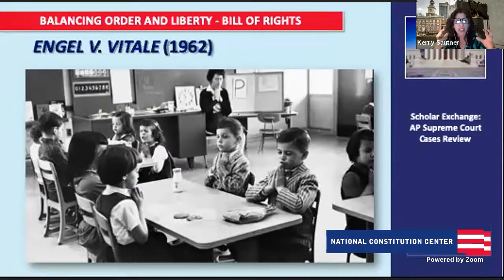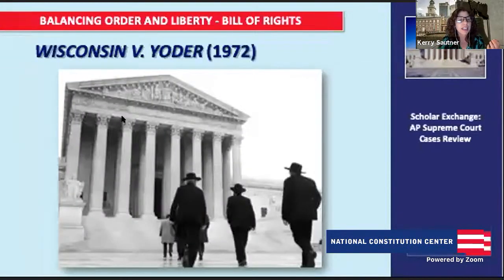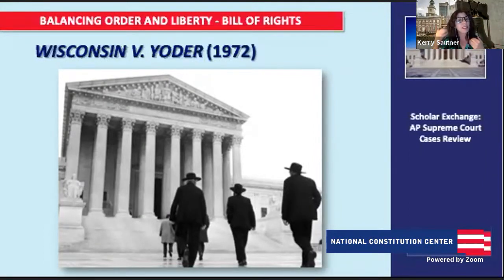That's around the establishment clause in the First Amendment. Now the next case looks at the other half of religious freedom in the First Amendment — the free exercise clause. It's looking at Amish students being forced by the government to attend school after eighth grade, which was not what their parents wanted. Is there anything significant about eighth grade?